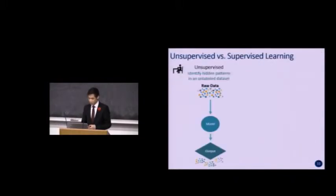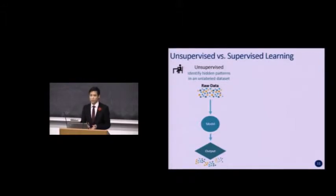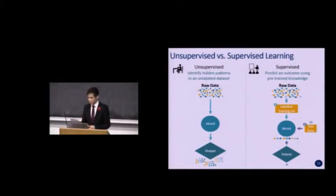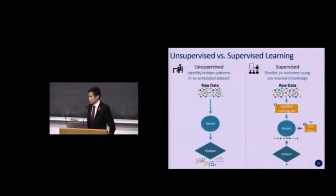In summary, unsupervised learning takes a large data set and tries to identify patterns and groupings when you don't know what the labels are supposed to be. In contrast, supervised learning trains an algorithm to build a model to predict outputs based on pre-trained knowledge. For the remainder of the talk, we will be looking only at supervised learning, and I'll hand it over to Justine to talk more about how machine learning is used in pattern recognition and medical imaging.